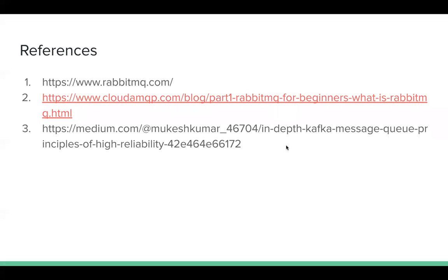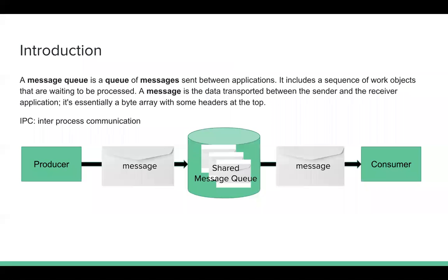For this presentation, I referenced some websites — basically three websites. They are very useful; if you have time, you can also take some time to read about them. Basically, a Message Queue is a queue of messages sent between applications. It includes a sequence of work objects waiting to be processed. A message is the data transported between the sender and the receiver application — essentially a byte array with some headers at the top.